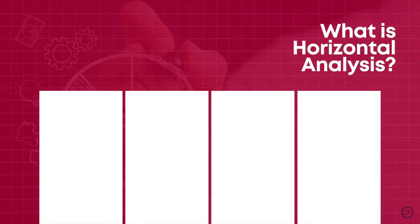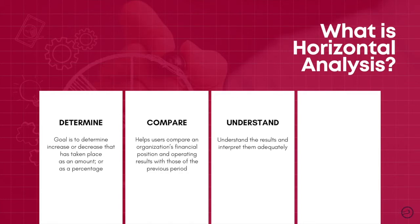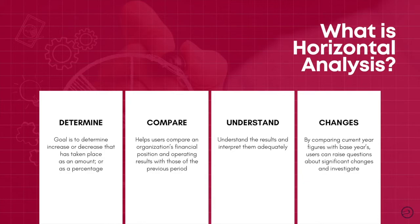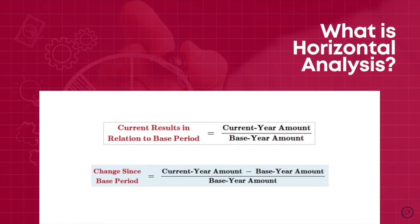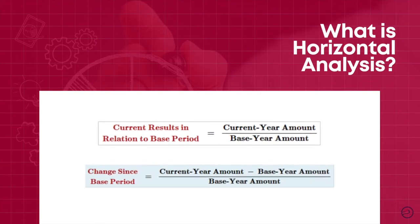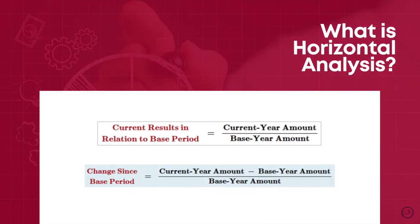The first technique is called horizontal analysis, also known as trend analysis, since it looks at financial statements over multiple periods. The main idea is to understand the change within a line item compared to its base year, which can be expressed as a percentage or an amount. It helps compare different line items within financial statements with past periods and allows users to easily spot trends and growth patterns. It can be mathematically calculated in two ways: one, by subtracting the base year amount from the current year and dividing by the base year to determine changes since the base year; two, by dividing the current year amount by the base year to determine current results in relation to the base period.